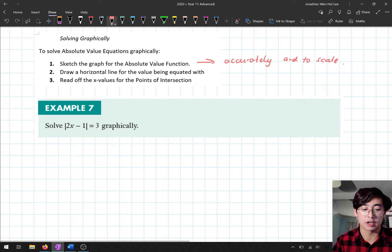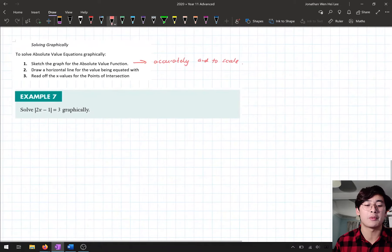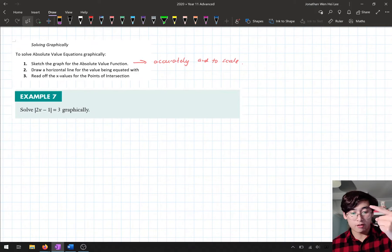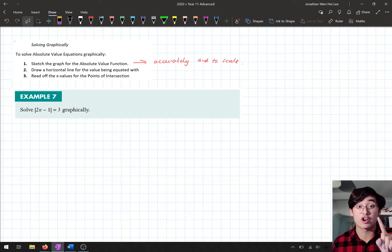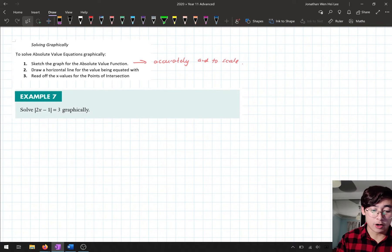So here is an example where we are going to apply these three steps. When we are solving graphically, draw the graphs of the absolute value function accurately and to scale, then we draw a horizontal line for the value that we're equating it with. And the final step is to read off x values for the points of intersection. So let's have a go at this one.